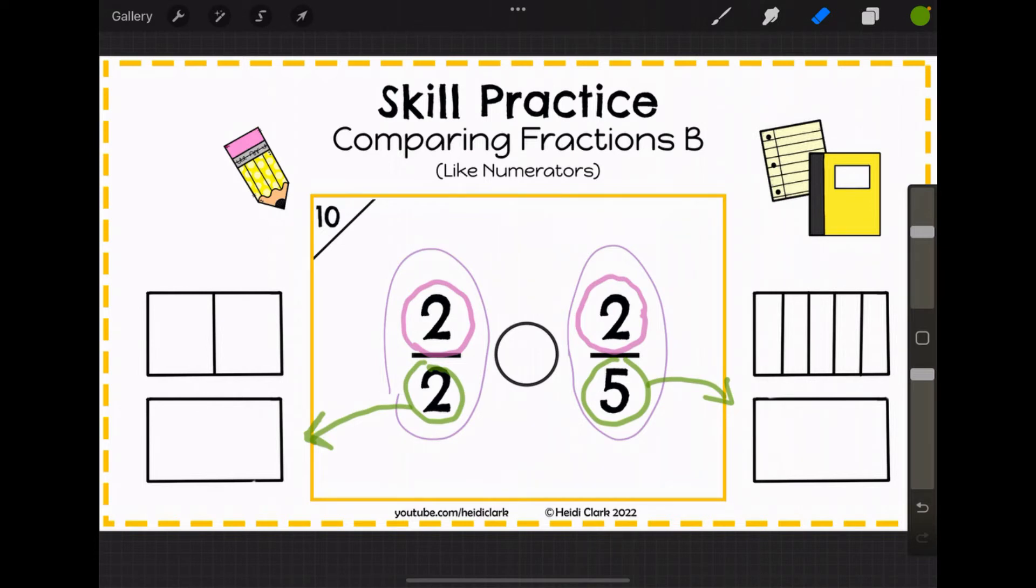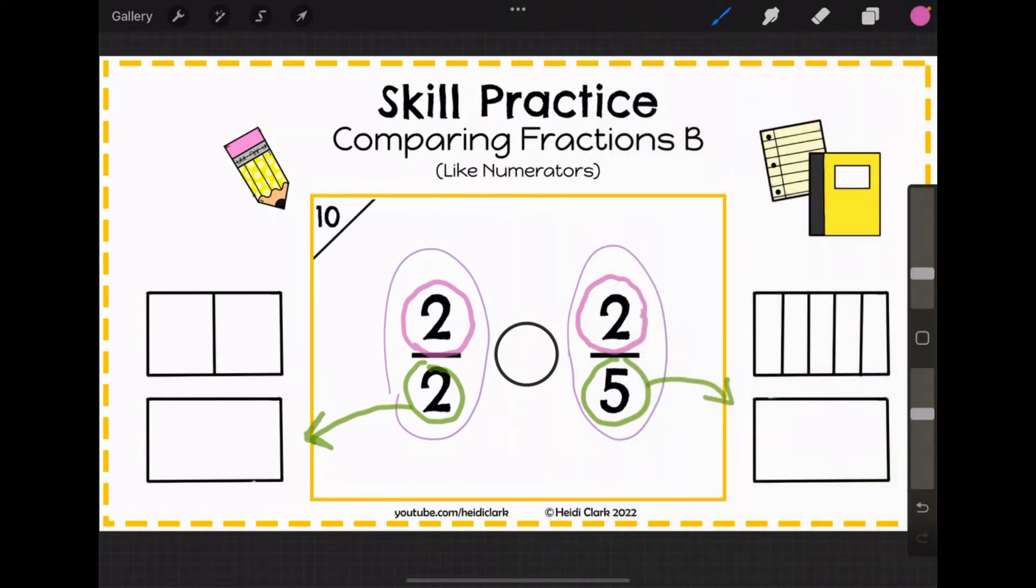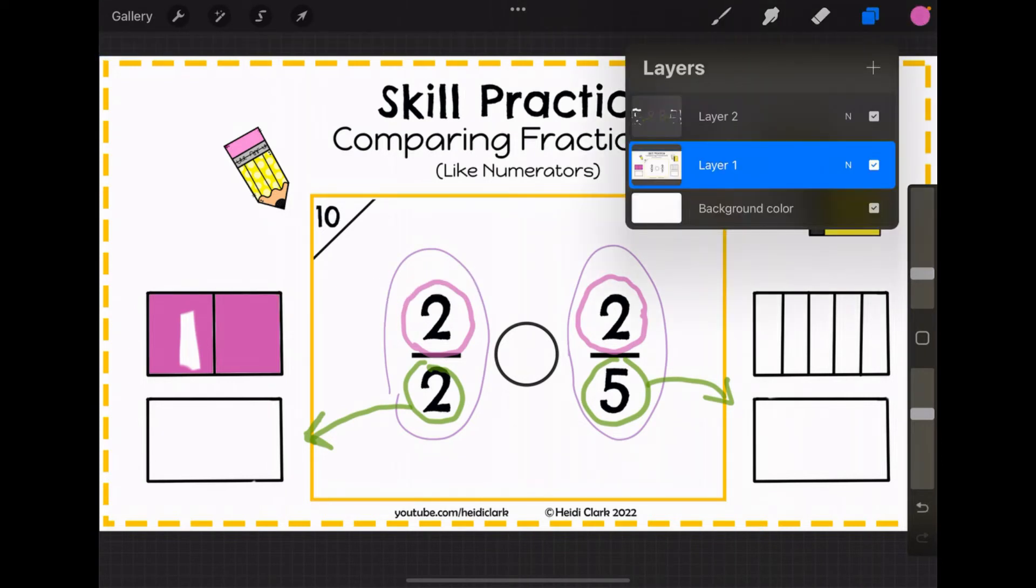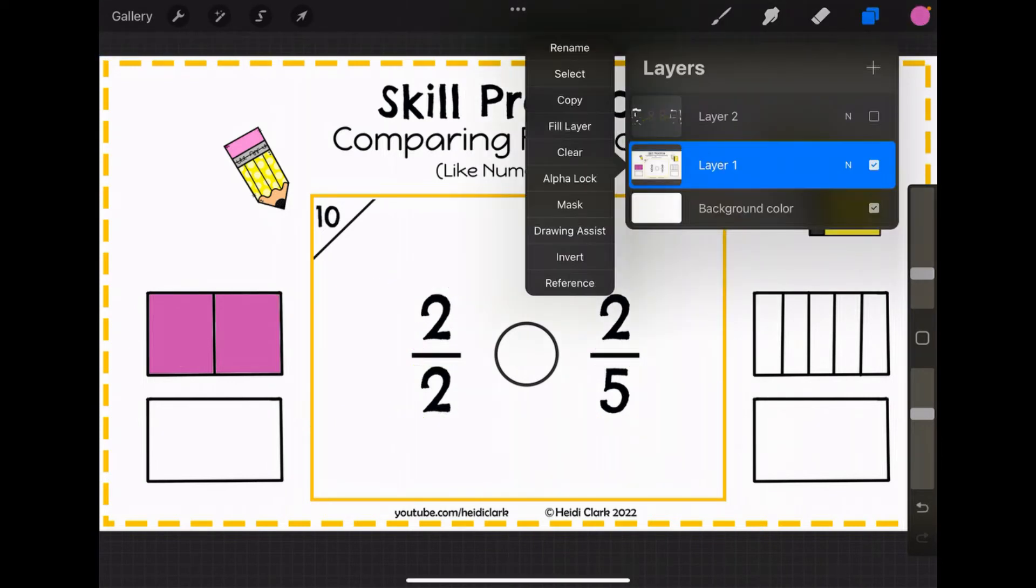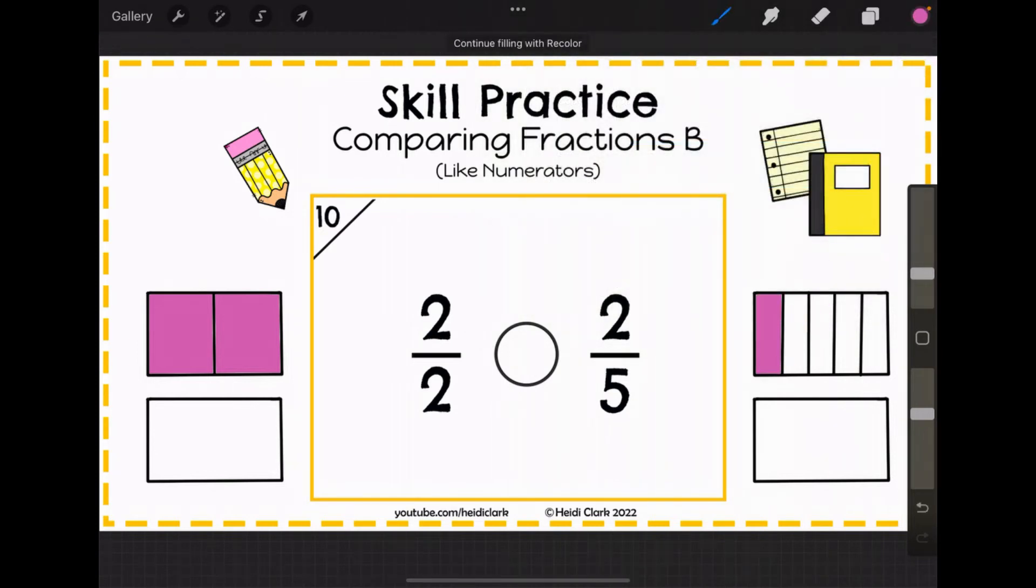Now, since the numerator is the same, you're going to get two pieces either way, but let's go ahead and fill it in. So on the left you're going to get 2 halves, and on the right you're going to get 2 fifths. Which one of those is a bigger fraction?